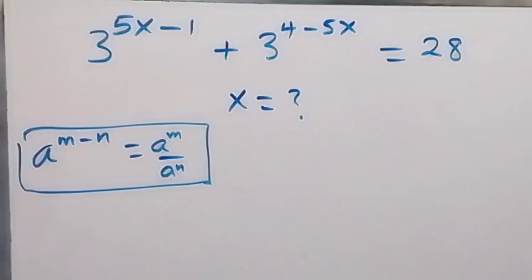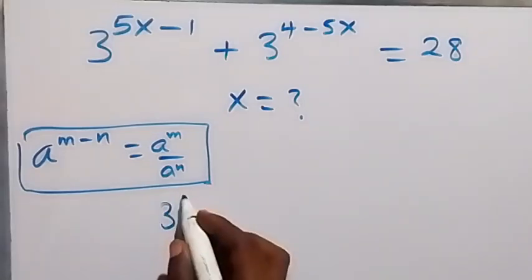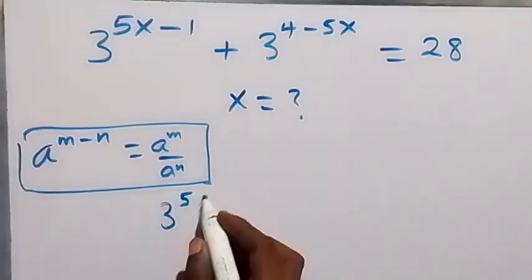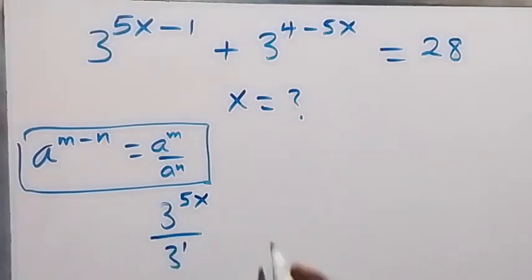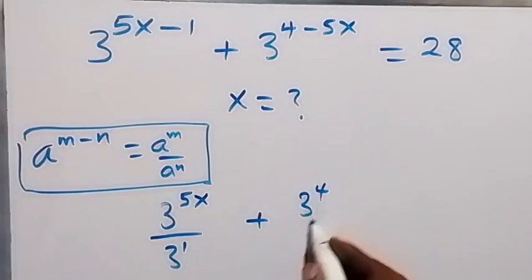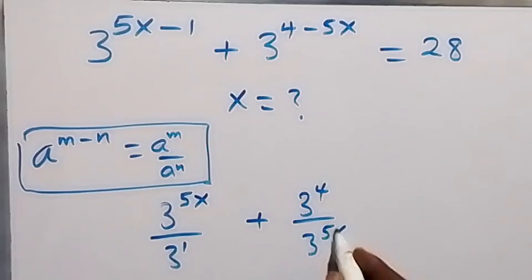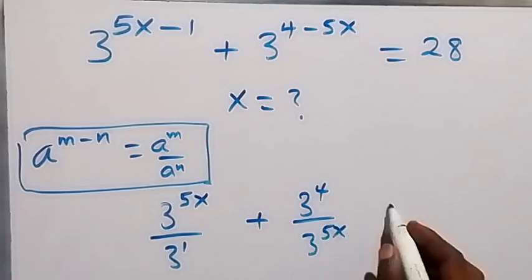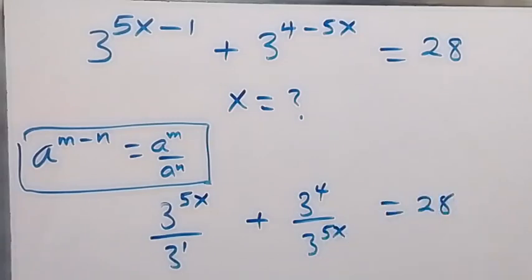So when we apply this law here, we can write this as 3 raised to power 5x over 3 raised to power 1, then plus 3 raised to power 4 over 3 raised to power 5x, and that equals 28.